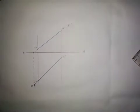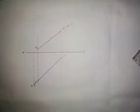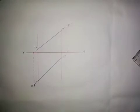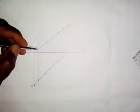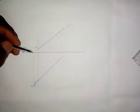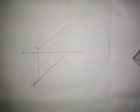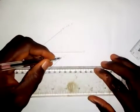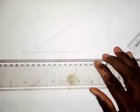The next thing is to get the true length of the line using the auxiliary view method. We want to get the auxiliary plan and also the auxiliary elevation. To get the auxiliary plan, you need to draw a perpendicular line to this — a perpendicular line to point A and another perpendicular to point B. Since this line is inclined at an angle, we can't just get it directly.